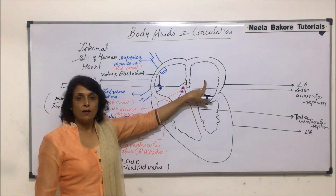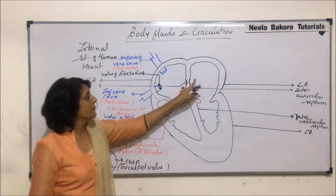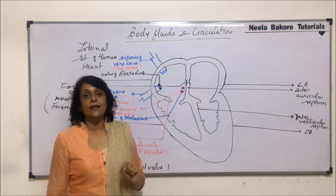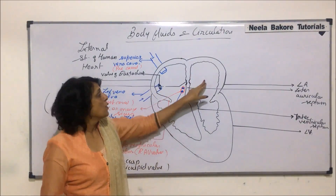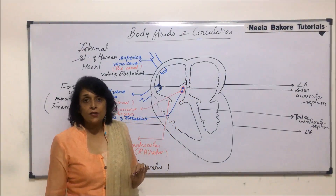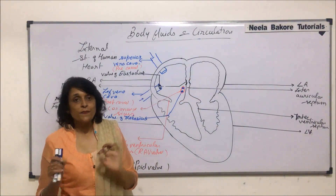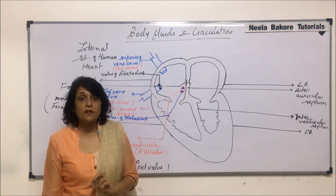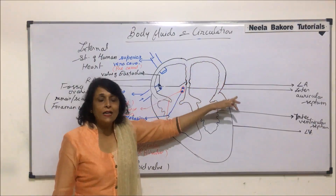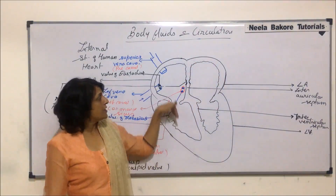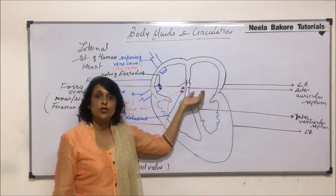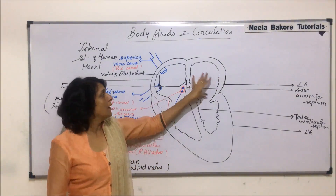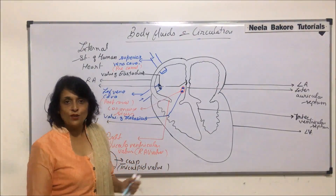Now coming to the left atrium — it receives blood from the lungs, and the blood coming from the lungs is oxygenated blood. This oxygenated blood is brought by the pulmonary veins. The right side receives deoxygenated blood and the left side receives oxygenated blood. Arteries take blood out of the heart — usually oxygenated — and veins bring blood into the heart — usually deoxygenated — with one exception: the pulmonary vein, which brings oxygenated blood. We will now talk about the pulmonary veins and how many of them open into the left atrium.